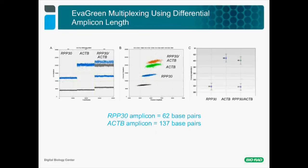Another approach to duplexing EvaGreen assays involves the use of different amplicon sizes. As an intercalant agent, the amount of fluorescence emitted by EvaGreen is dependent on the final amount of DNA present. When comparing amplicons of equivalent PCR efficiencies, the longer amplicon will result in a higher fluorescence level. In this case, a 62-nucleotide amplicon (RPP30) is compared to a 137-nucleotide one (beta-actin). The differential fluorescence between the two amplicons leads to four different clusters when both assays are combined. When clusters are identified in QuantaSoft, the resulting quantification for each target is similar whether the assays are done separately or in duplex.